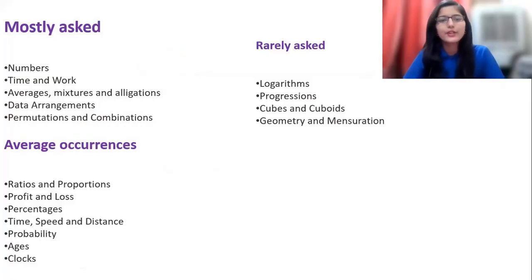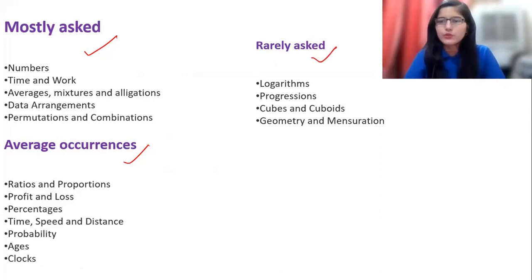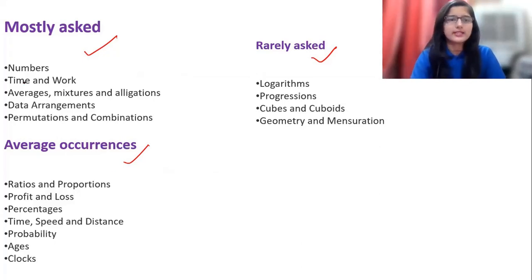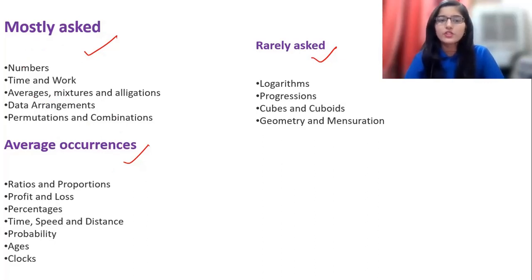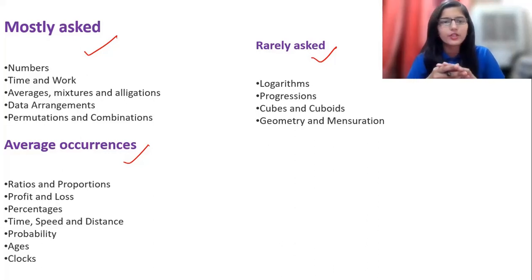Now let's understand the most important topics. Here we have categorized the topics as mostly asked, average occurrences, and rarely asked. Your full concentration should be on mostly asked and average occurrences categories because most of the questions you will get from these topics only. First focus on these particular topics and then if you have time, go for the rarely asked ones as well.